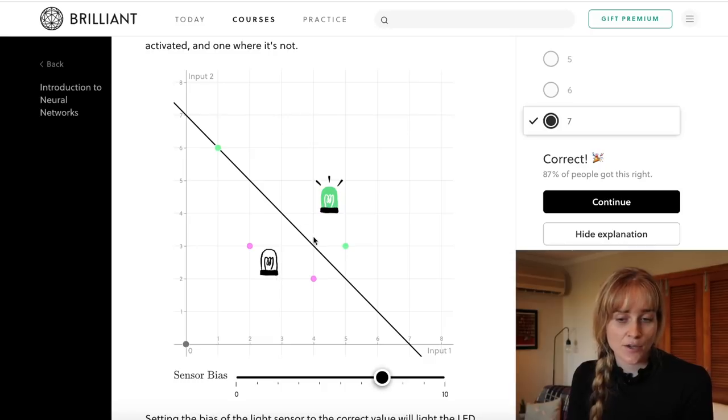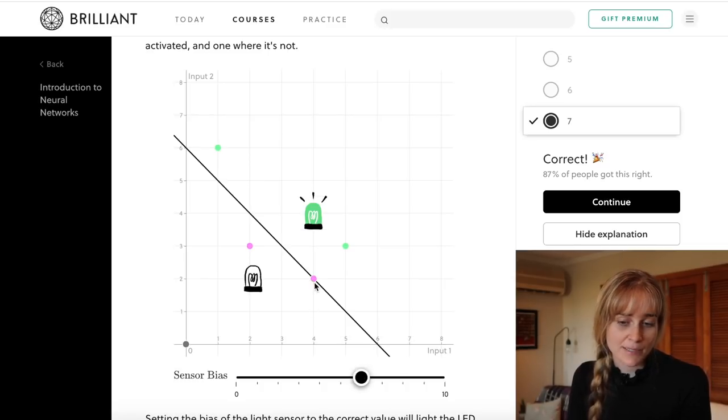The fact that the line goes through this green point up here is actually fine since anything equal to the bias or above will be able to activate the LED. As opposed to if we put it at number six, this one would have been activated and we don't want it to be.